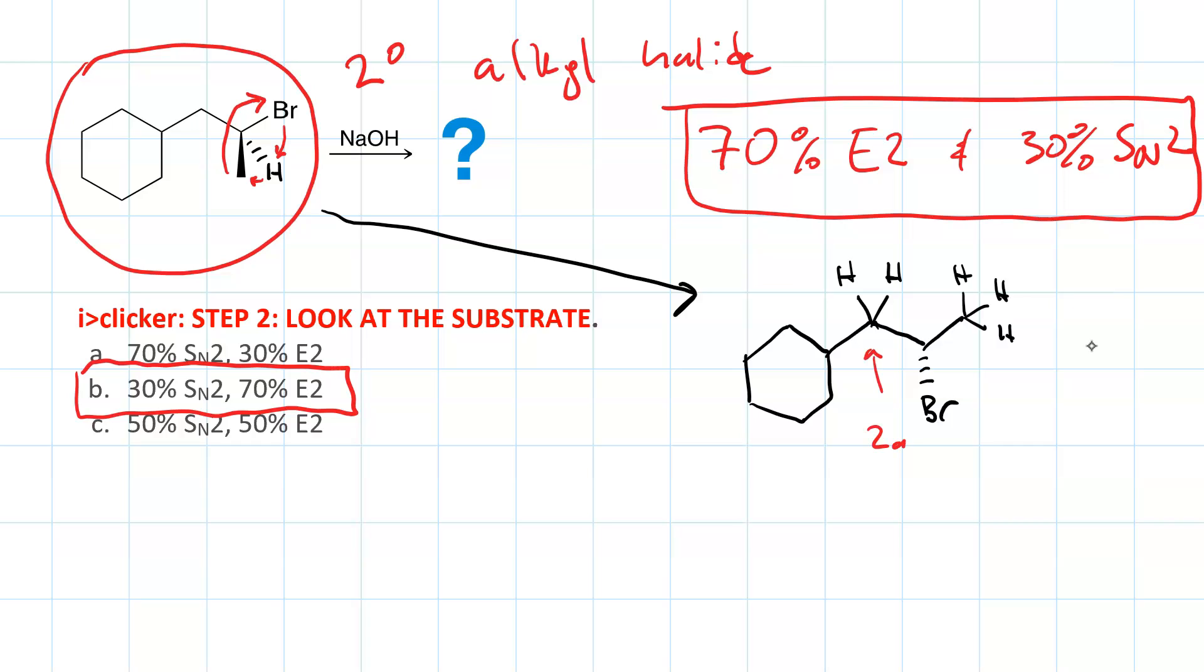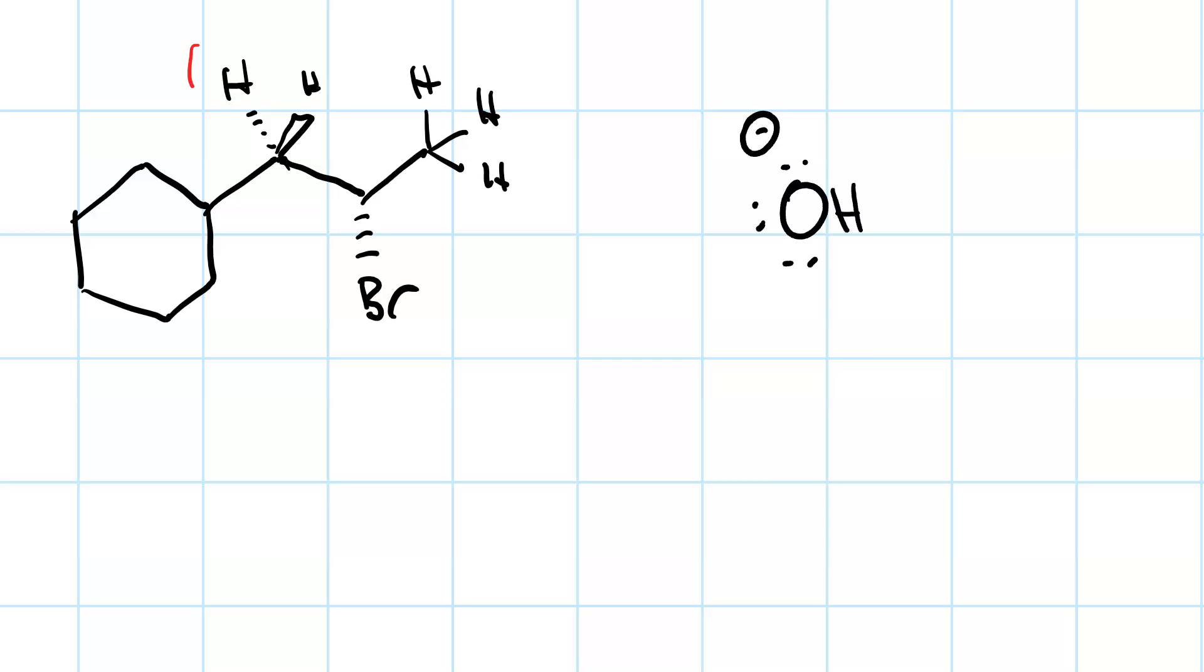Eliminating one of these would be Zaitsev, and eliminating one of these would give us the Hoffman product. What determines Zaitsev versus Hoffman? The bulkiness of the base. Hydroxide is non-bulky, which means we're going to get Zaitsev products. This means our hydroxide is going to take one of these two beta protons, whichever one is 180 degrees from the bromide. So since the bromide is down and on a dash, we want the beta proton that's up and on a wedge. So we get proton transfer and loss of a leaving group. And so the trans alkene is our major product.